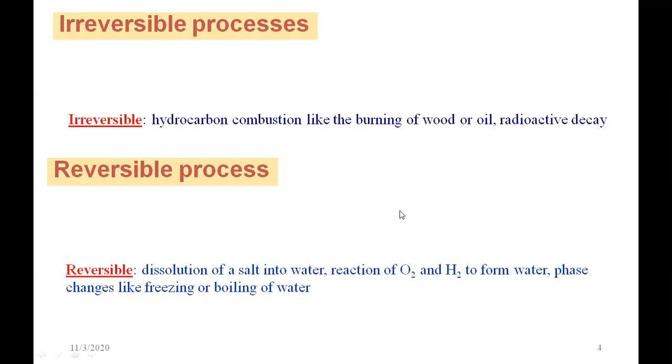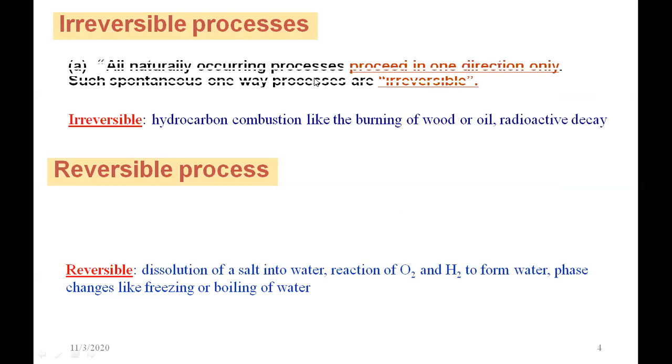What do you mean by irreversible process? All naturally occurring processes proceed in one direction only. Such spontaneous one-way processes are irreversible, like hydrocarbon combustion, the burning of wood or oil, or radioactive decay. These are examples of irreversible processes.